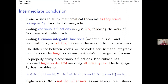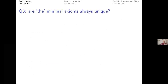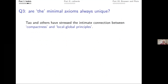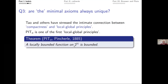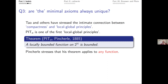Question number three: are the minimal axioms always unique? Terence Tao and Gowers have stressed the intimate connection between compactness and local-global principles. Pincherle already considered the following local-global principle over 100 years ago: a locally bounded function on Cantor space is globally bounded. Locally bounded means there's a ball around any point in which the function is bounded above.